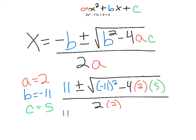Alright, I'm just going to bring down the 11, so I have 11 plus or minus. Then I'm going to simplify all of that stuff underneath the radical — that's called the discriminant. So in my calculator, I'm typing: open parentheses, negative 11, close parentheses, squared, minus 4 times 2 times 5. And I end up with 81. So I have the square root of 81 over 2 times 2, which is 4.